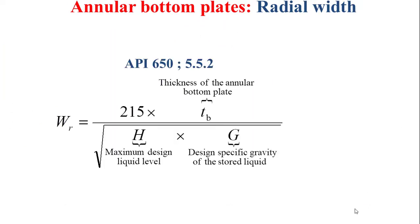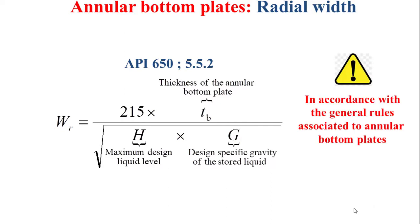For the radial width of the annular bottom plates, it is determined based on the formula shown in this slide. WR is the radial width, determined as a function of the annular bottom plate thickness TB — which is determined from Table 5-1 — and also as a function of the maximum design liquid level H and the design specific gravity G. This radial width must also comply with the general rules for outside width and inner radial width explained previously.